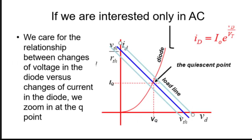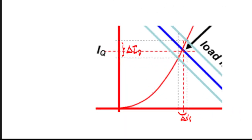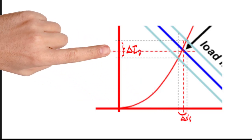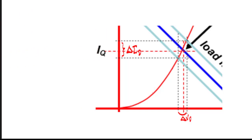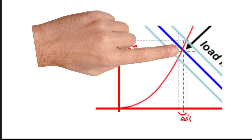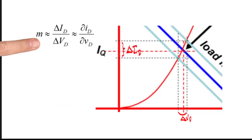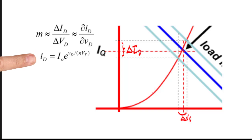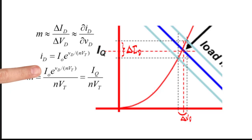We care about the relationship between changes of voltage in the diode versus changes of current in the diode. Zooming in at the quiescent point for the small signal, small changes of voltage produce small changes of current. The relationship between those changes is given by the slope of the tangent to the exponential at the Q-point: Δi / Δv. This approximated value is obtained by differentiating the diode current with respect to diode voltage using Shockley's formula. Note that the numerator of the slope is just I_Q, the quiescent current.